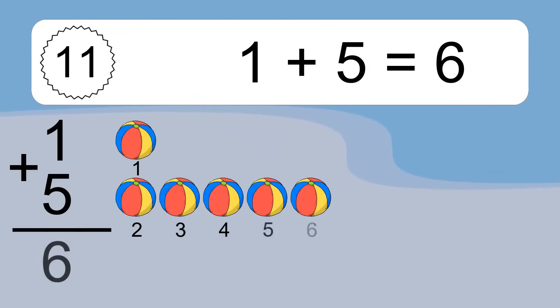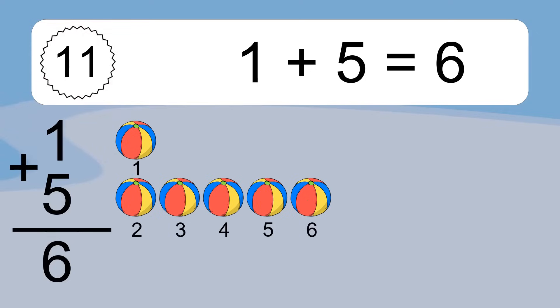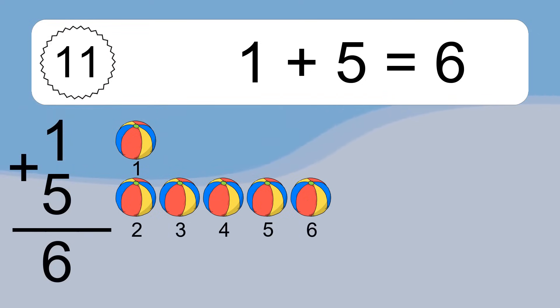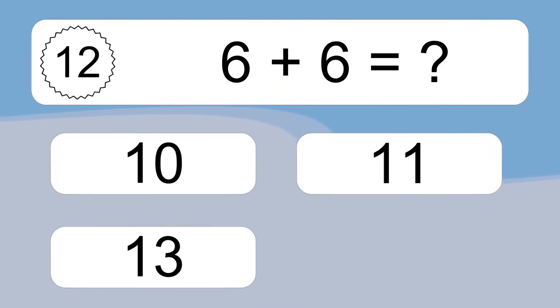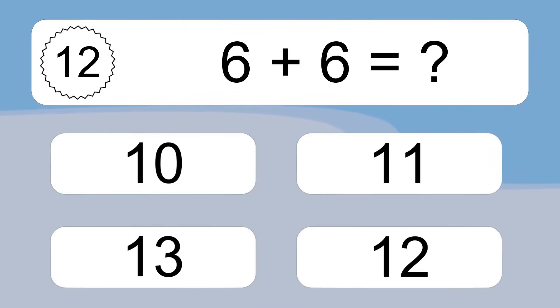1 plus 5 equals what? 1 plus 5 equals 6. Let's count it: 1, 2, 3, 4, 5, 6.